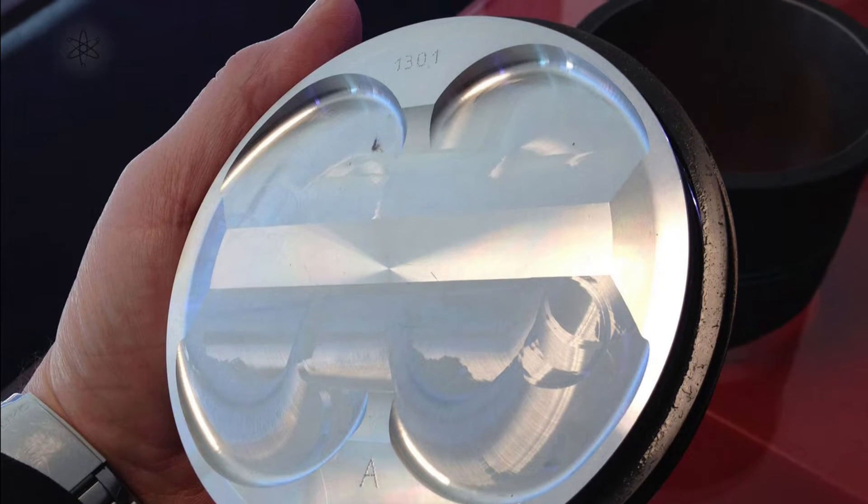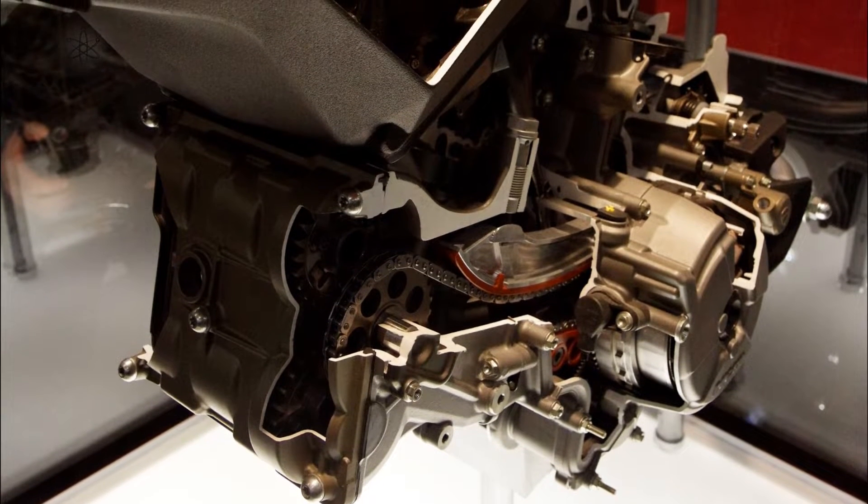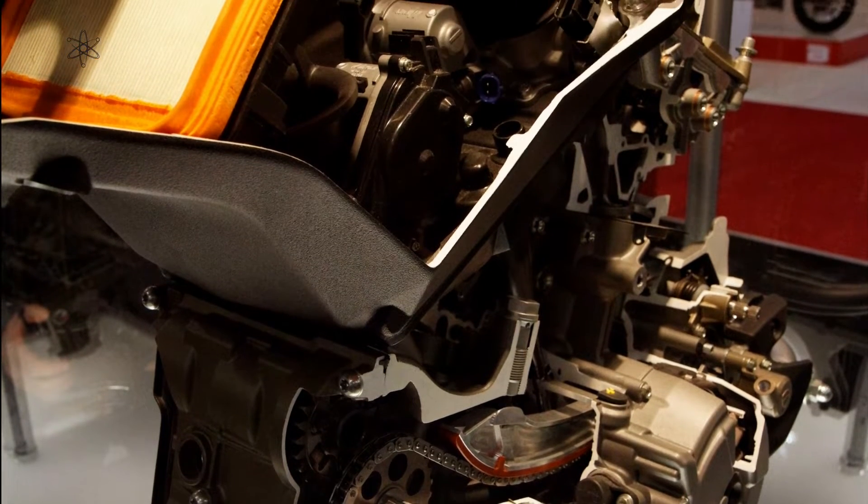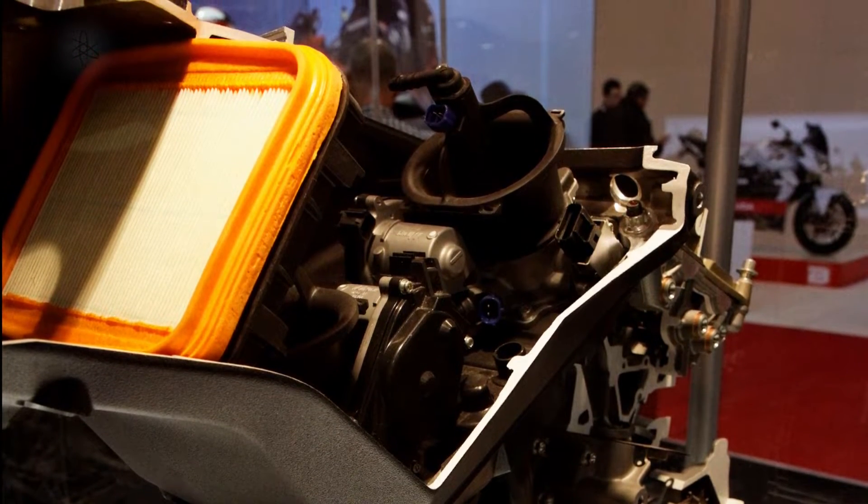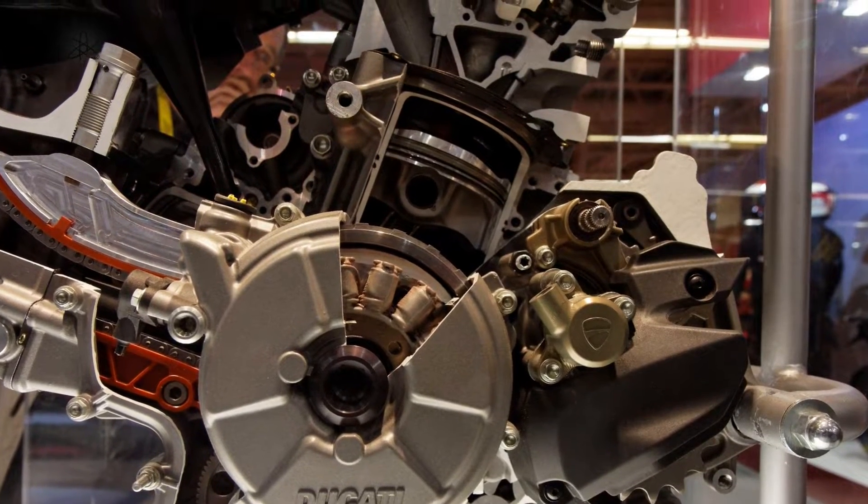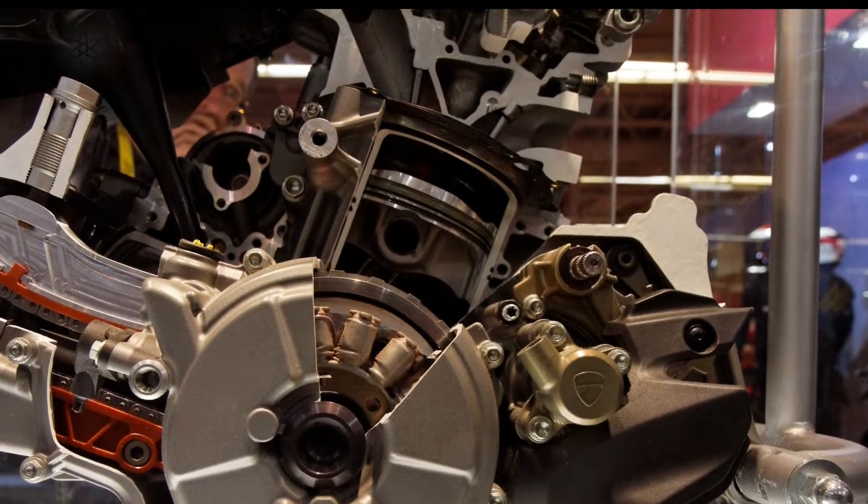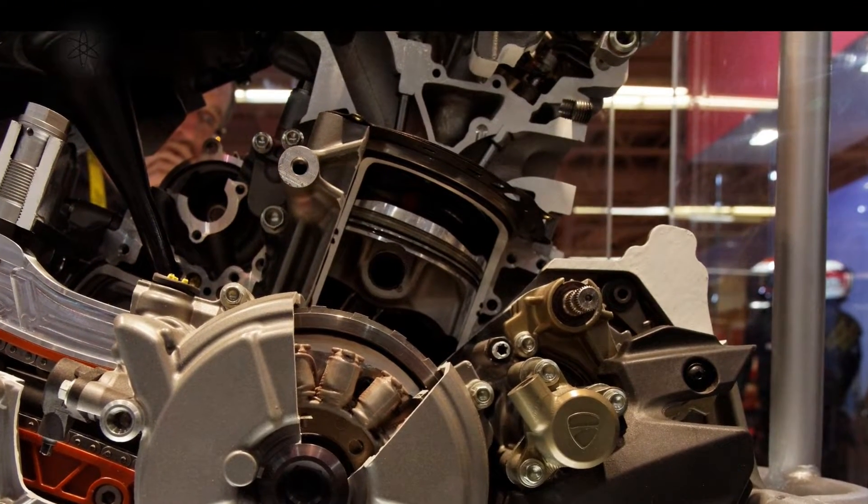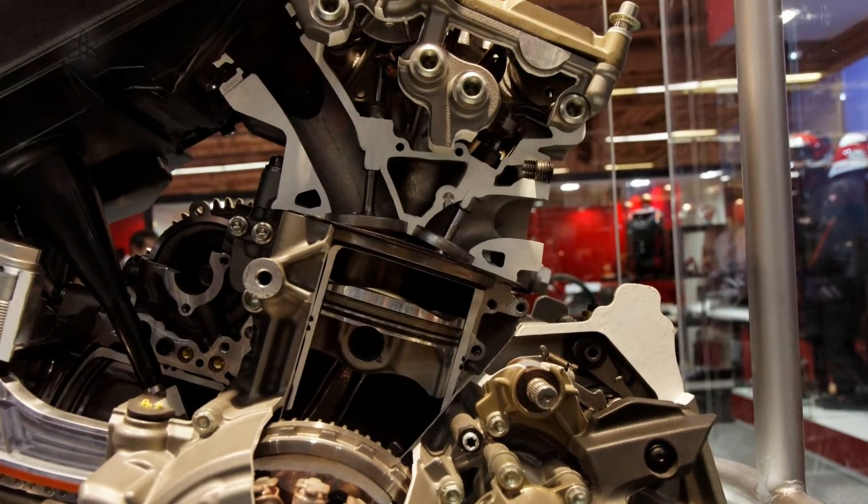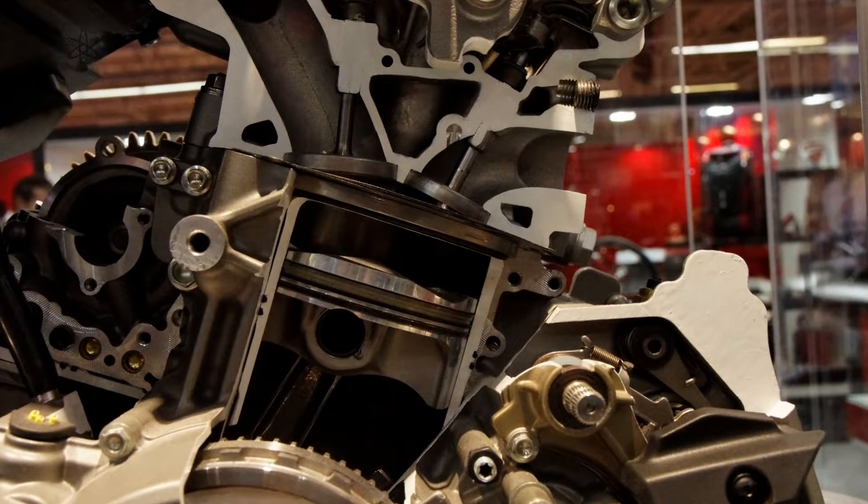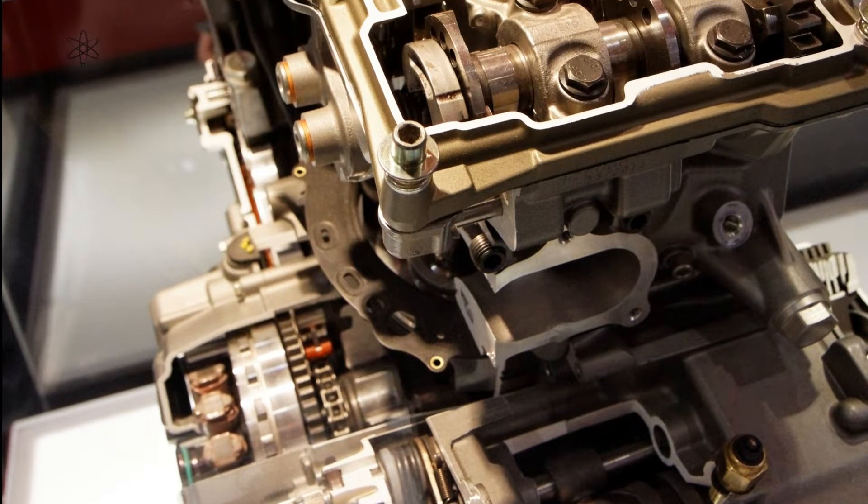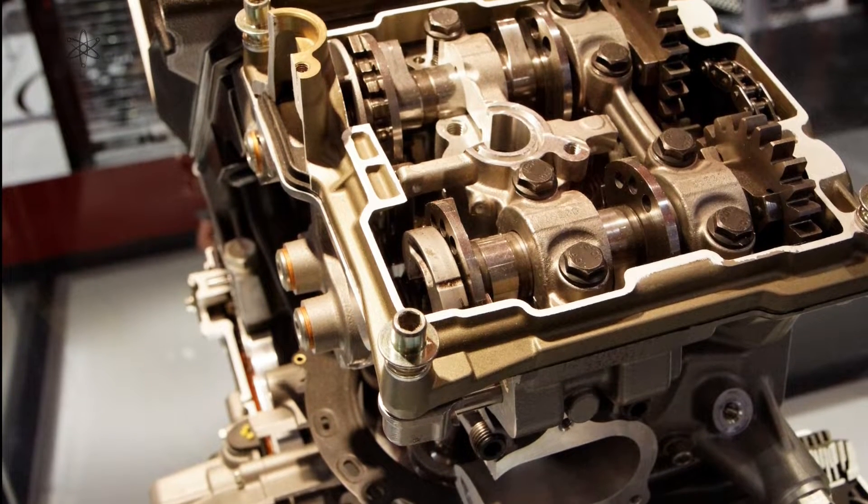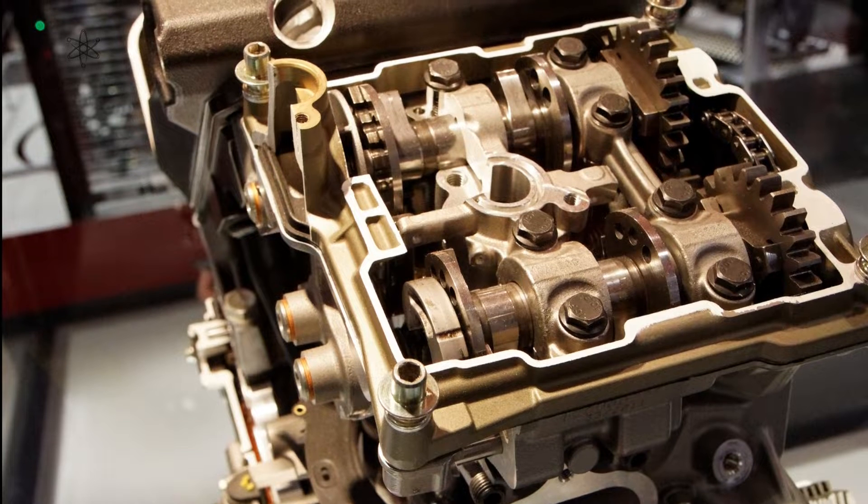Ducati's Superquadro 1285cc V-Twin, a case in point. To rev those high mass 160mm pistons to extremes at over 11,000 rpm and extract 162.6 horsepower per liter requires the use of exotic materials like titanium connecting rods and valves. It produces 209.4 horsepower and has a stroke of 60.8mm giving it a bore stroke ratio of 1.9 to 1.